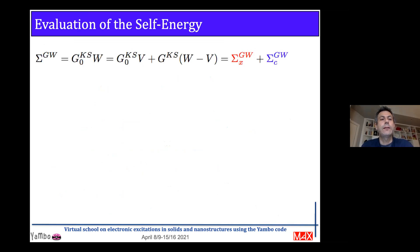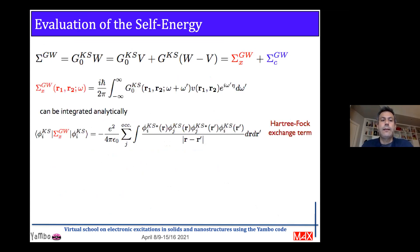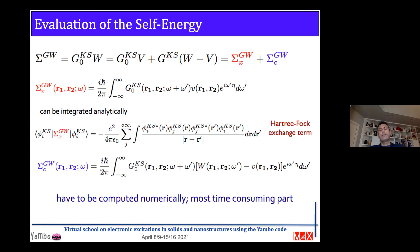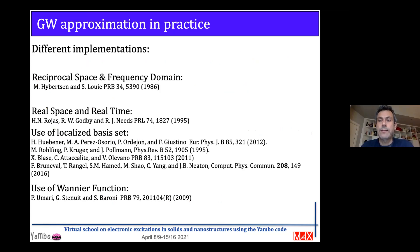Now we have our self-energy at the so-called G0W0 level. It is common practice to separate it into exchange and correlation parts. The exchange part, the integral in frequency can be done analytically and we arrive exactly to a Hartree-Fock exchange term, while the correlation term has to be computed numerically. The integral over frequency is the most time-consuming part of our calculation. Different implementations exist in the literature in various codes. YAMBO is a reciprocal space and frequency domain code for GW, as for instance other codes like ABINIT and VASP. Here are some references. Many other implementations of the GW calculation exist.